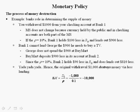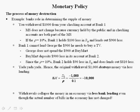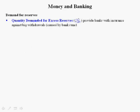The change in checkable deposits was minus $1,000. Minus $1,000 divided by the reserve requirement ratio of 10% or 0.1 is minus $10,000. So withdrawals collapse the money in the economy via less bank lending, even though the actual number of bills in the economy has not changed.